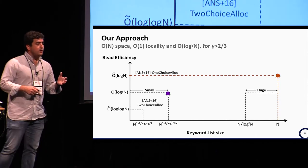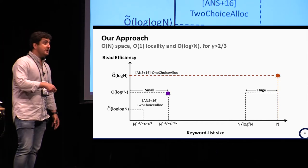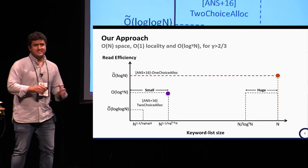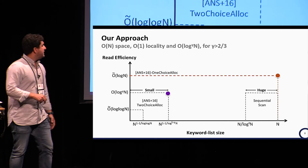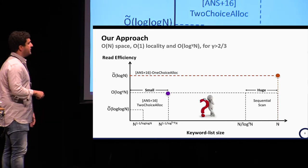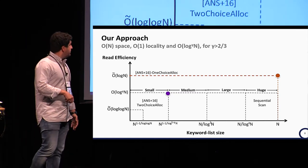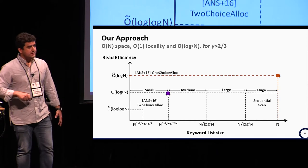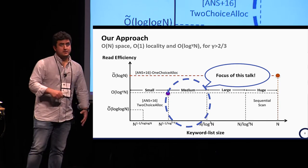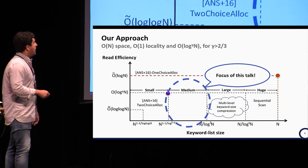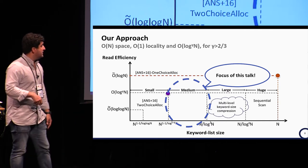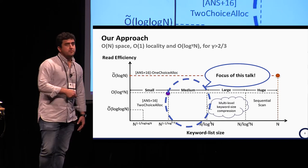The problem is also trivial for huge keyword lists — those with size larger than n over log to the power of gamma of n. In that case, simply reading the entire index every time achieves sub-logarithmic read efficiency. The real challenge is the region in between. We divide this region into two sub-ranges: medium and large keyword list sizes. Due to time constraints, we focus here on medium keyword lists, but the paper also covers the large case using a multi-level keyword size compression approach.